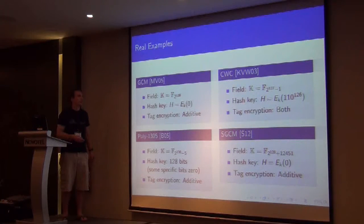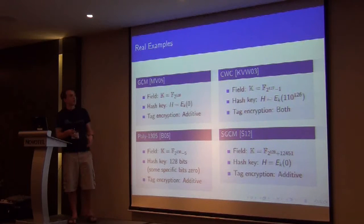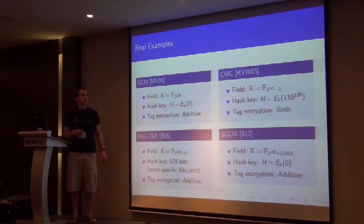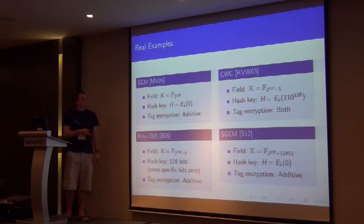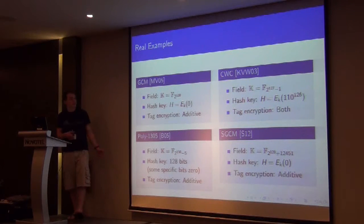CWC, another different field, another different method for deriving the hash key. And here it's doing both of these, it encrypts the hash and then adds on the nonce. But you don't really care about this, because if you've got the hash collision, then you get the MAC forgery.